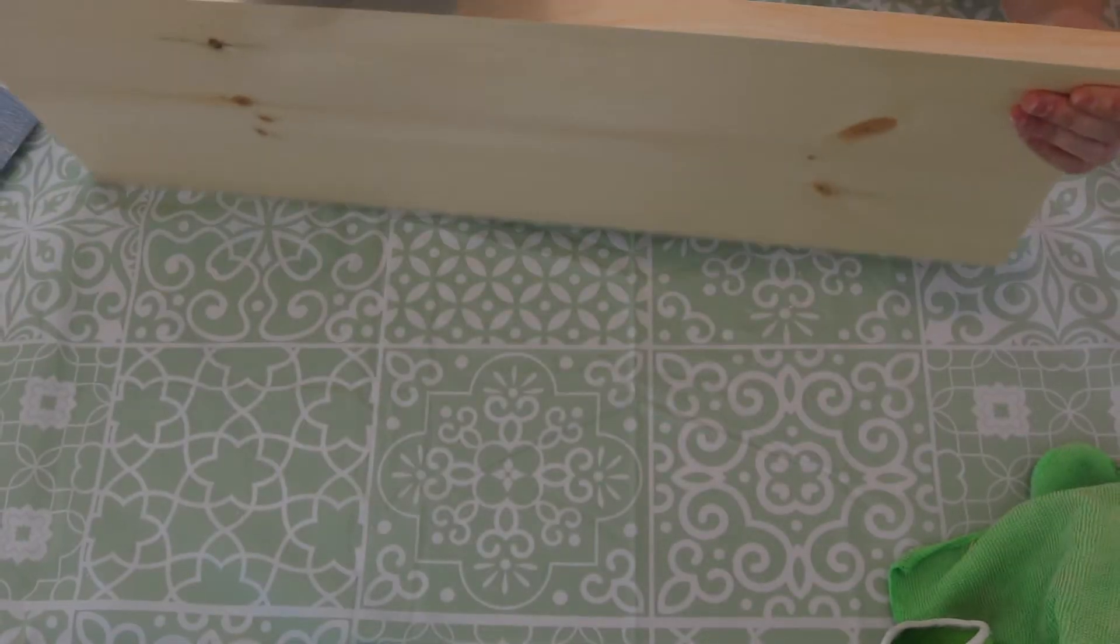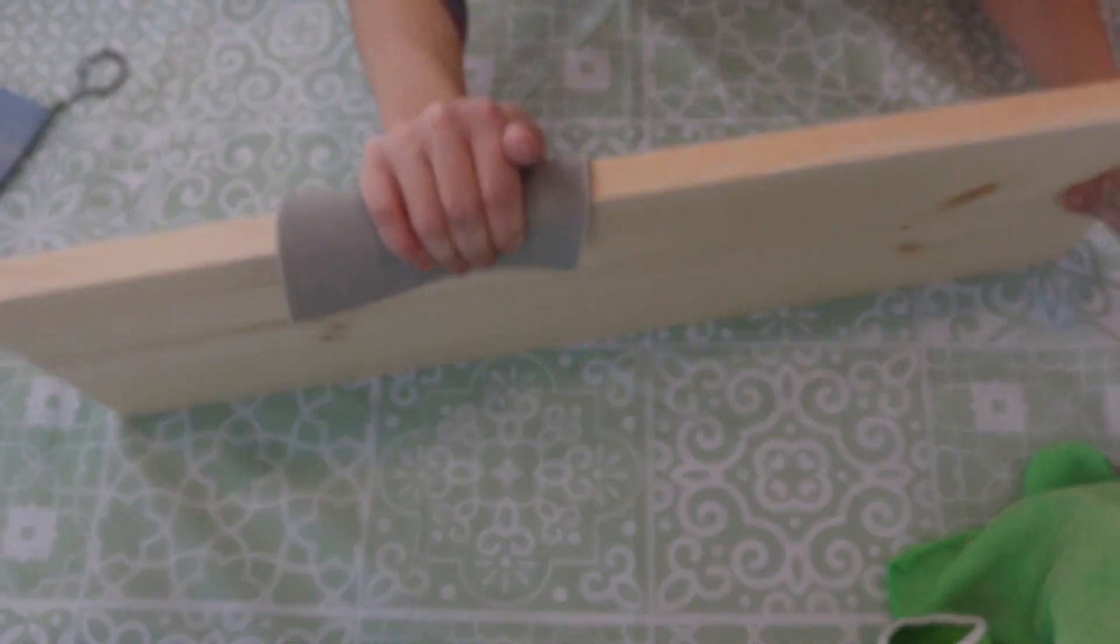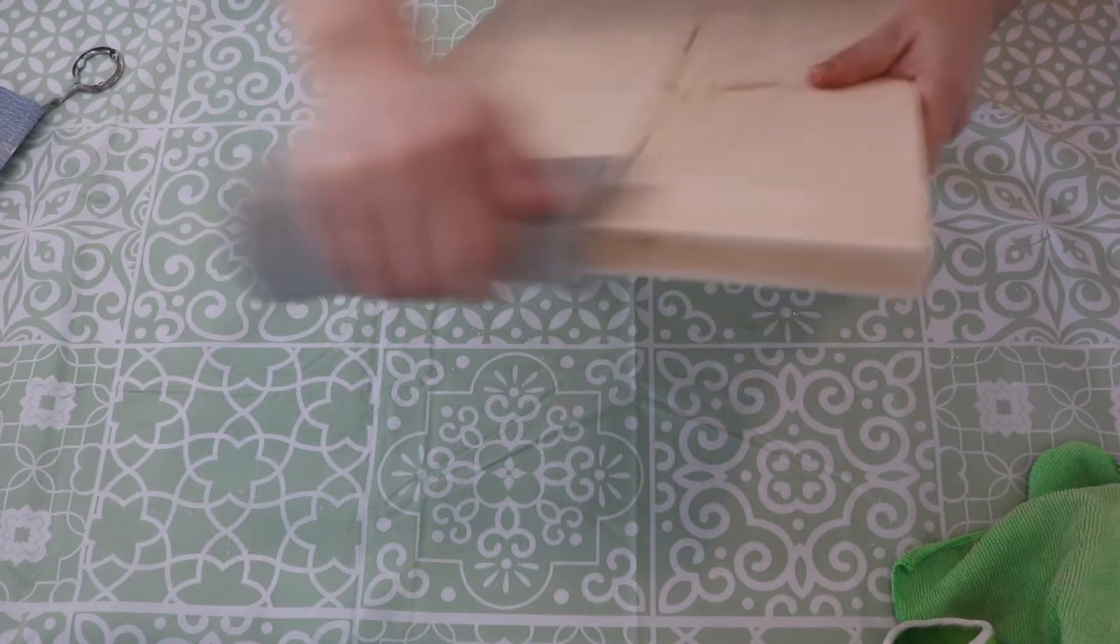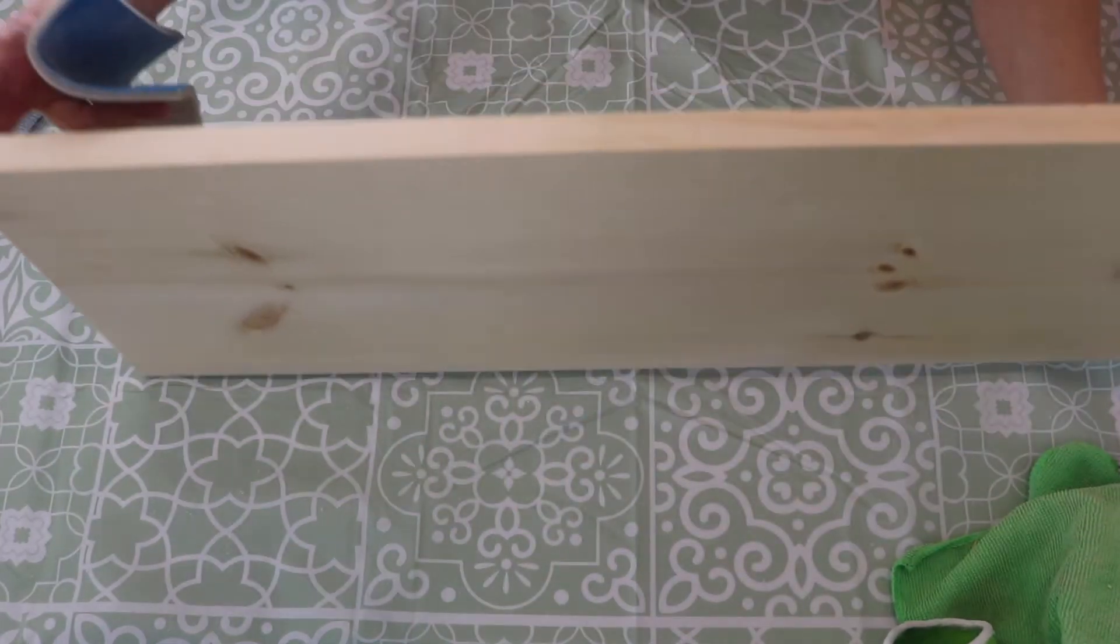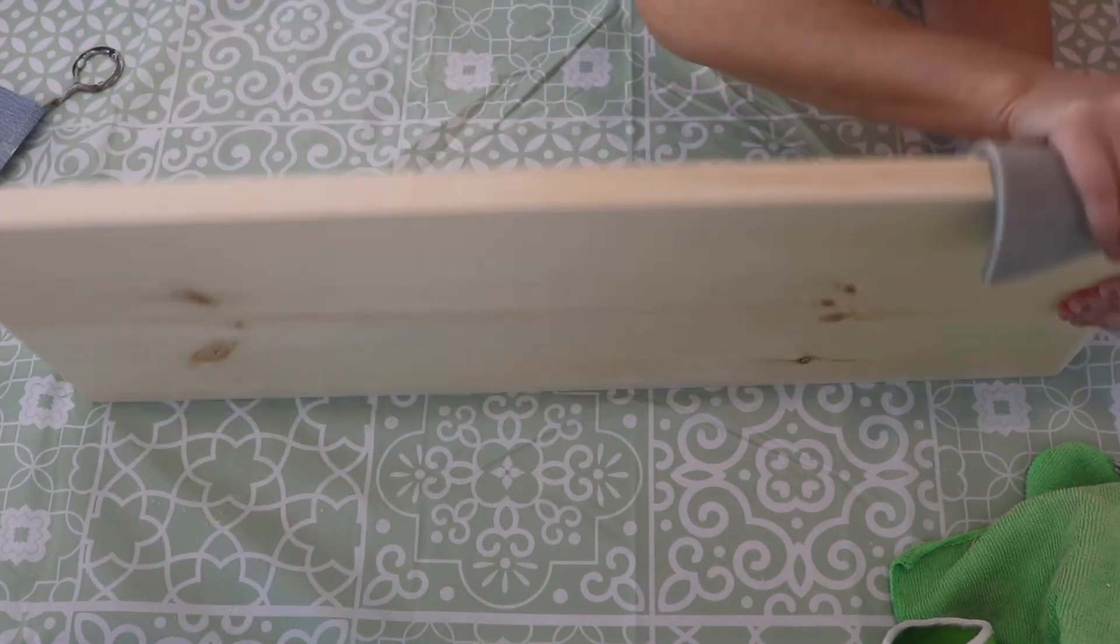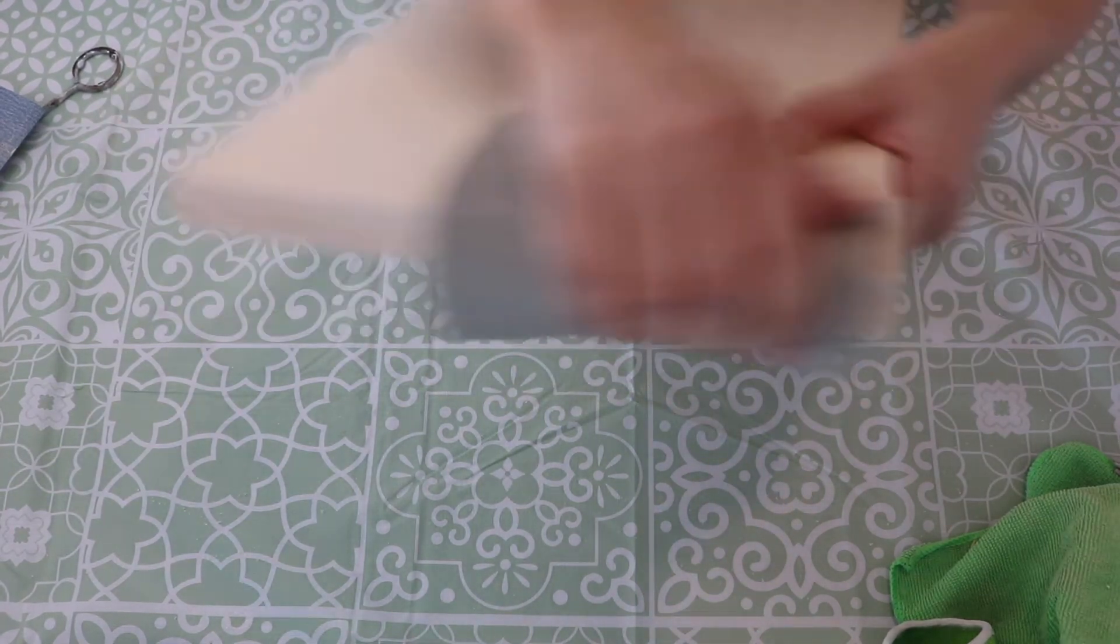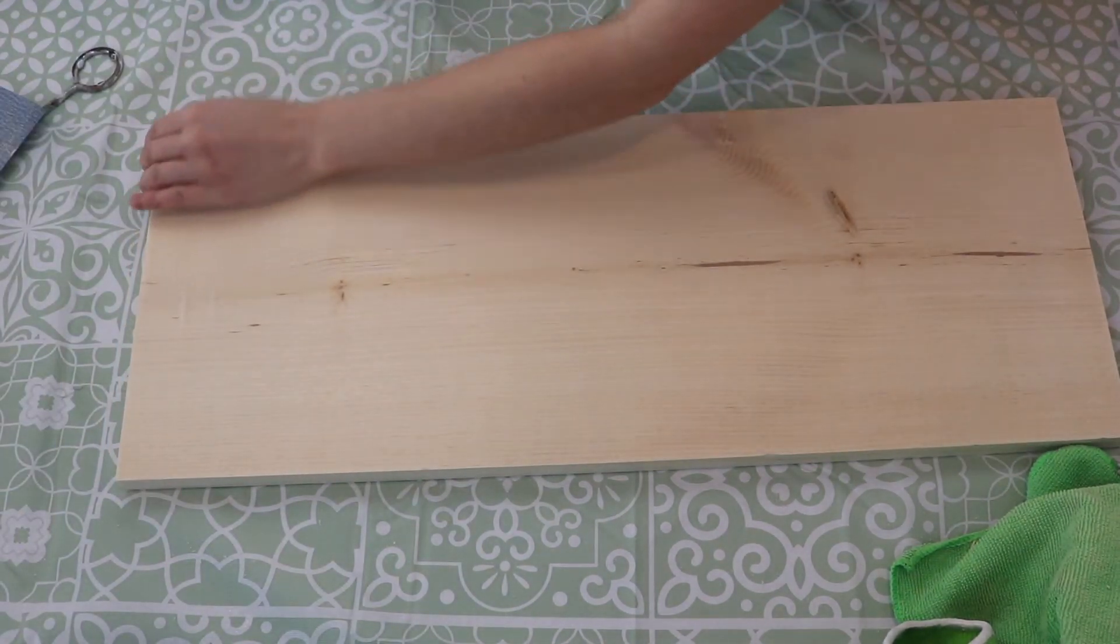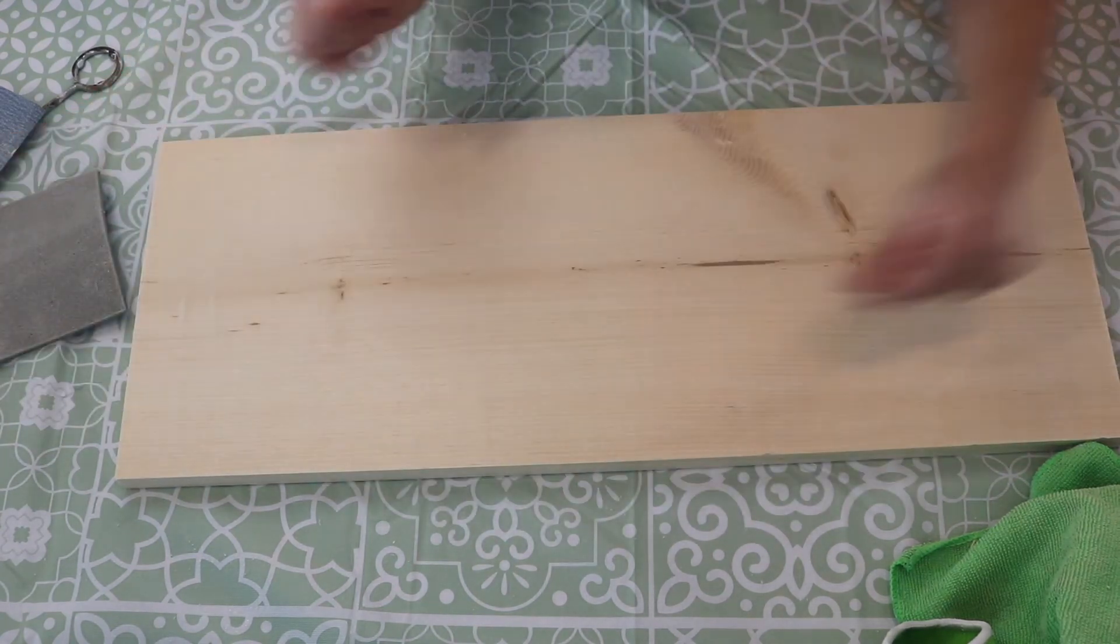What I like to do then is go along the edges. It works nicely here because it contours to the shape and gives you a nice even sanding on either side. Same with the end here. So now our piece has nice smooth edges and a nice smooth surface for us to get started.